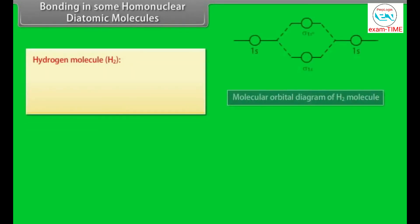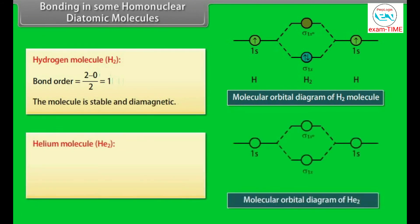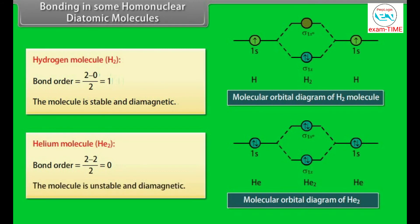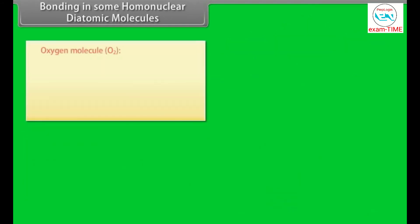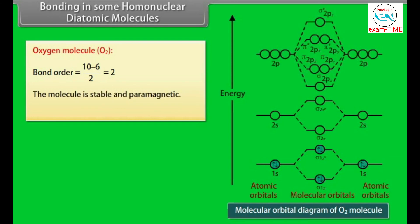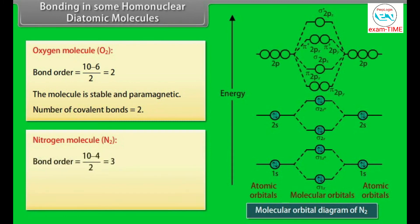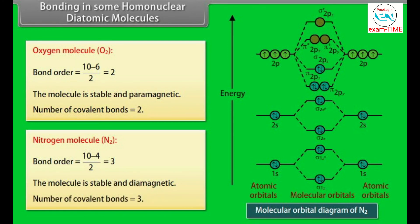For the hydrogen molecule H2, the bond order is 1 — the molecule is stable and diamagnetic. For the helium molecule He2, the bond order is 0 — the molecule is unstable and diamagnetic. For the oxygen molecule O2, the bond order is 2, the molecule is stable and paramagnetic, with 2 covalent bonds. For the nitrogen molecule N2, the bond order is 3, the molecule is stable and diamagnetic, with 3 covalent bonds.